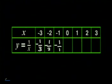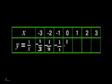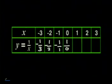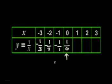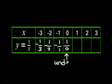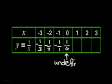Let me try the next one. When x is 0, y is 1 over 0. But something's weird here. You can never get a number like that.